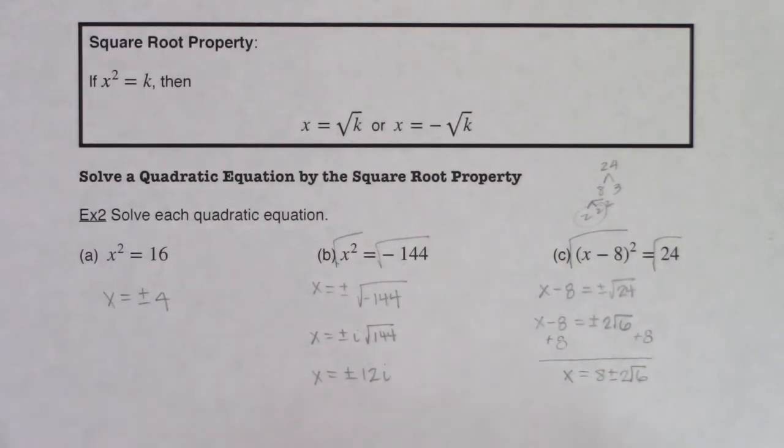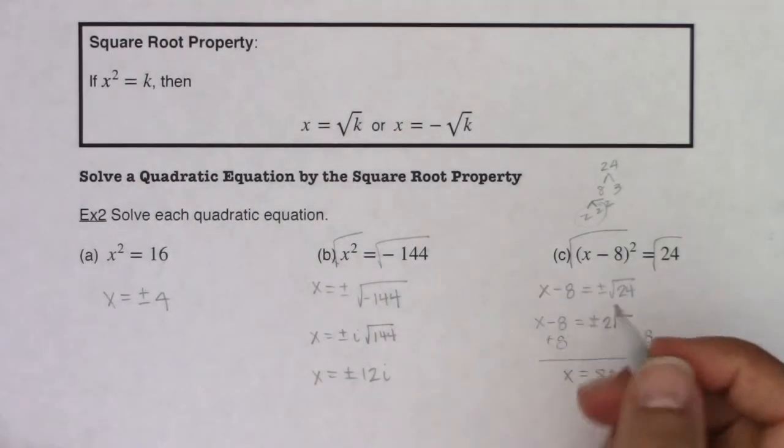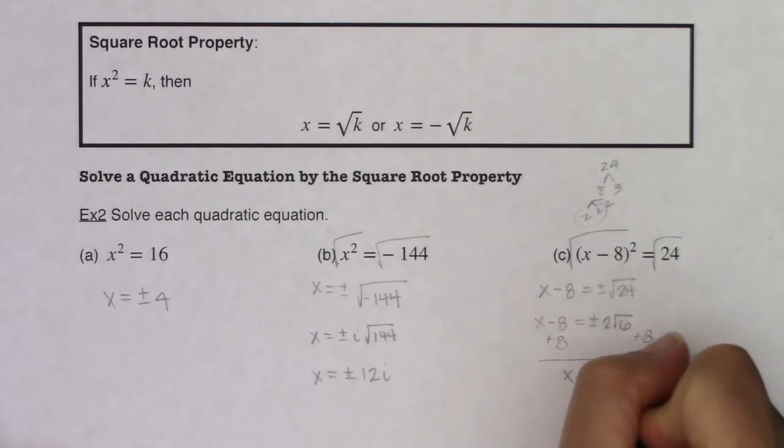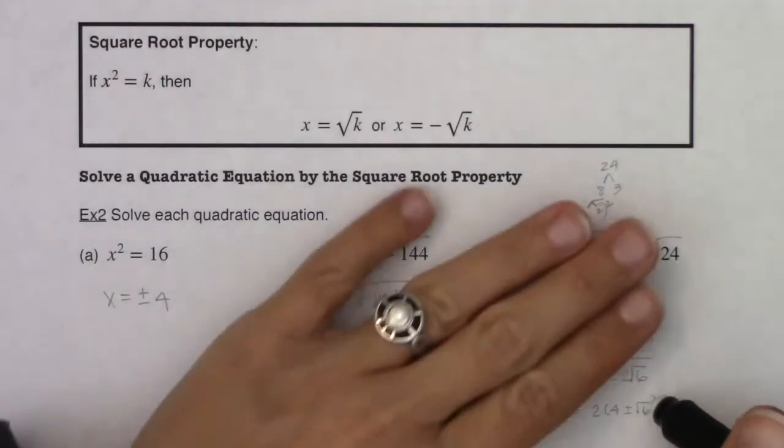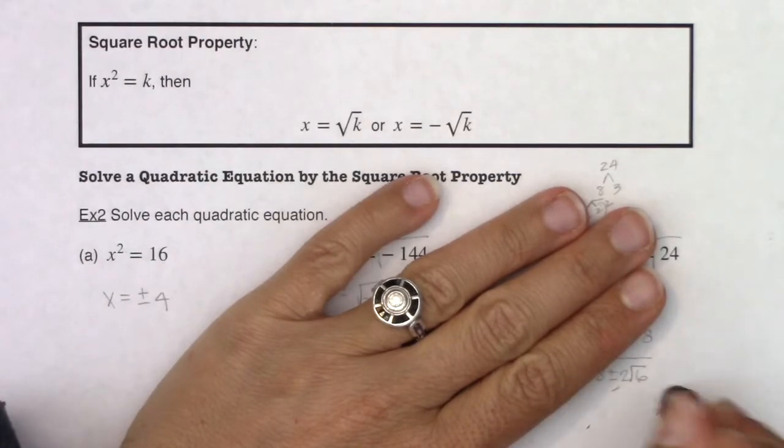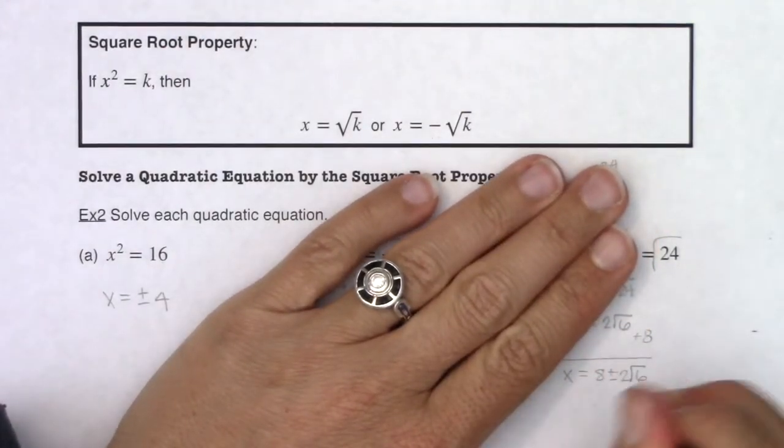If you wanted to be fancy, you could go ahead and factor out the 2 from each of these. You don't need to, but just to show you, you could have said this was 2 times 4 plus or minus root 6. You don't need to. So don't think you have to. In fact, let me just erase it. I don't want people to think that's what you have to do. Just want you to see that that's an option.